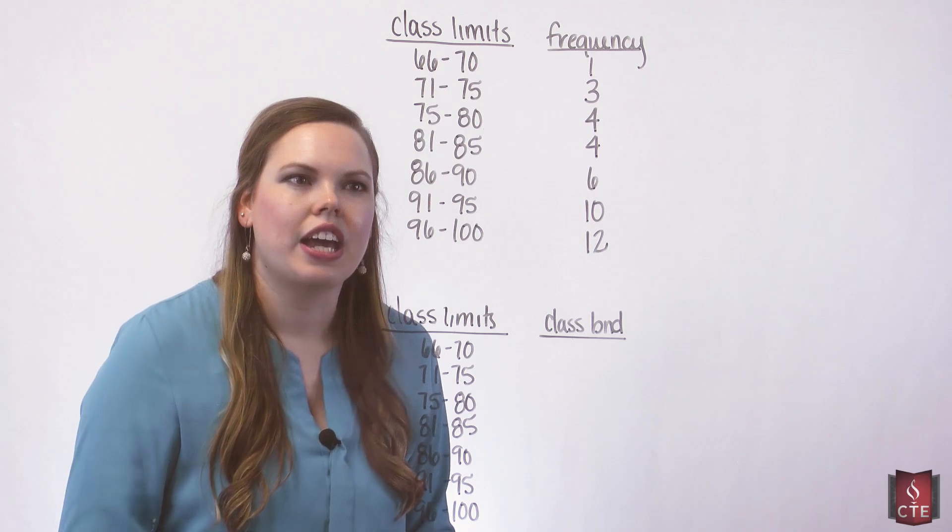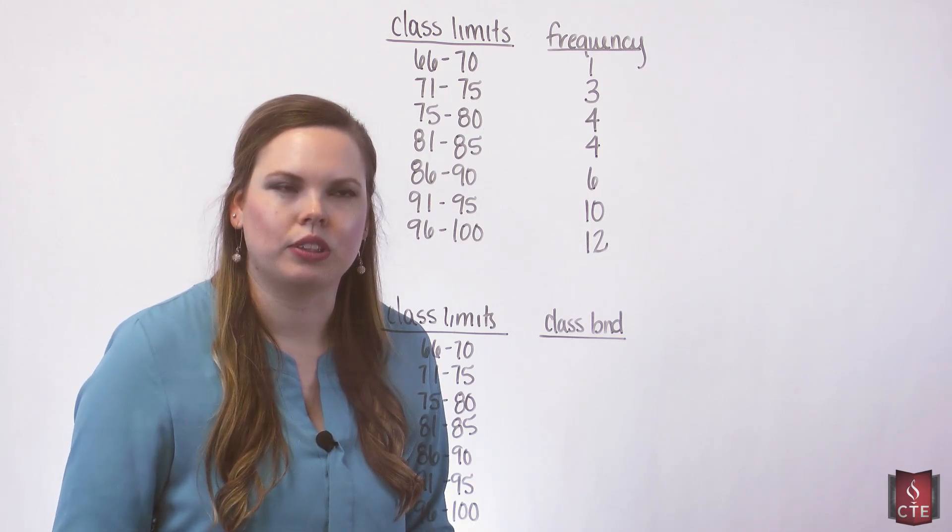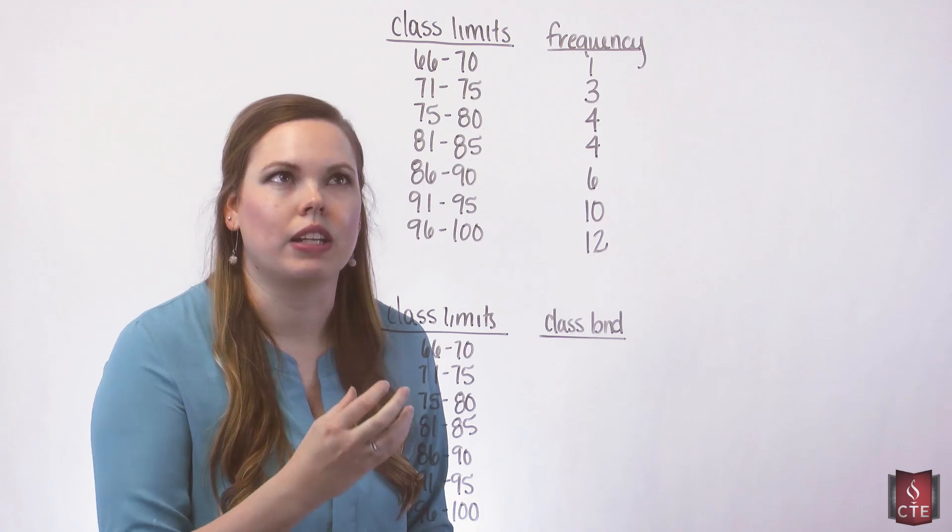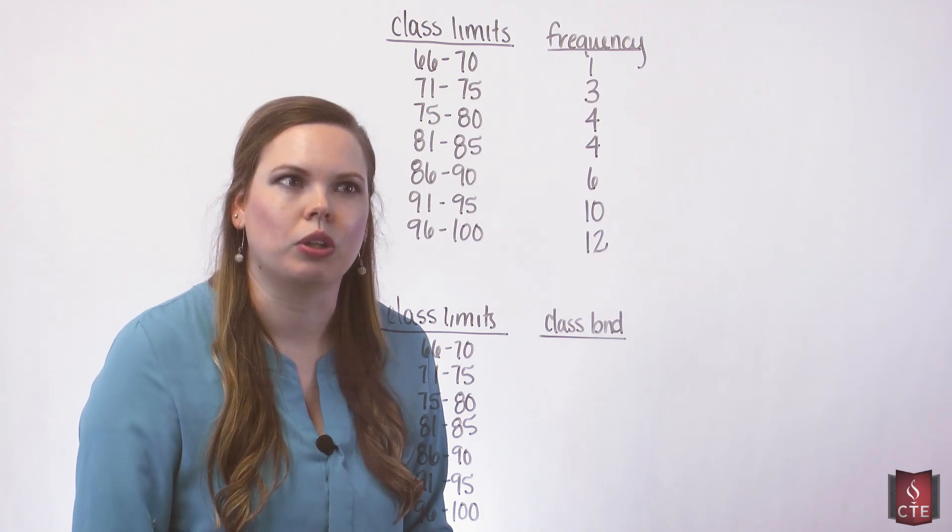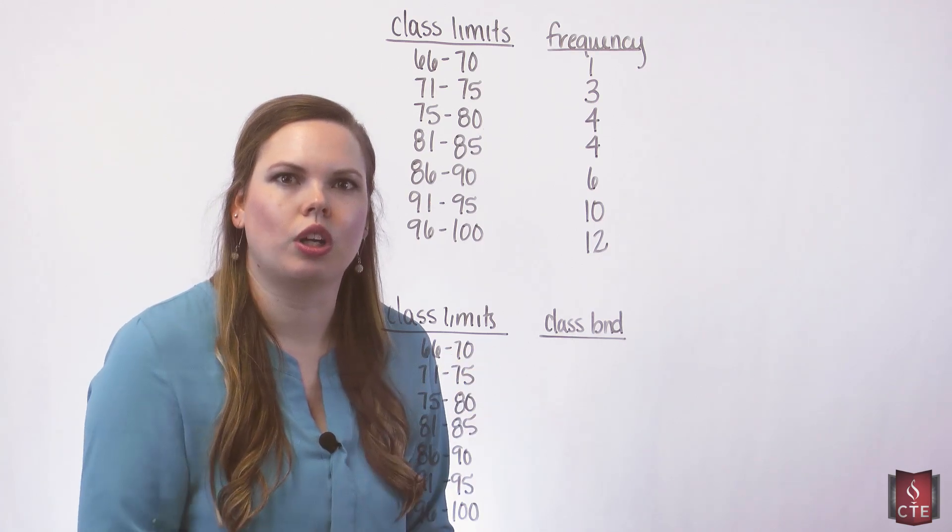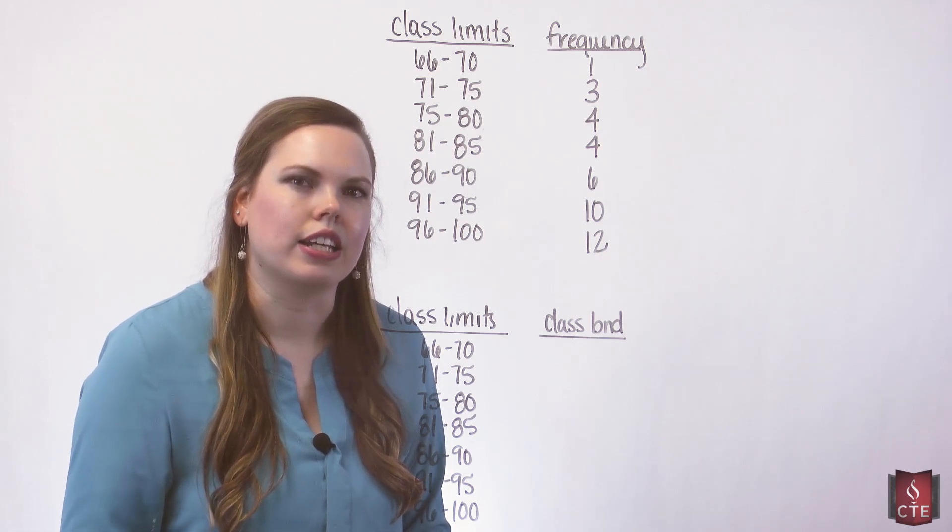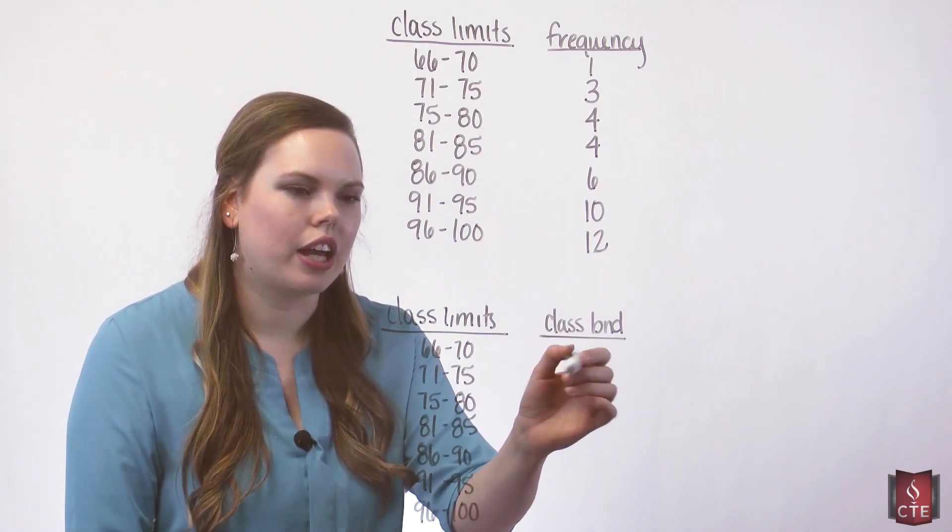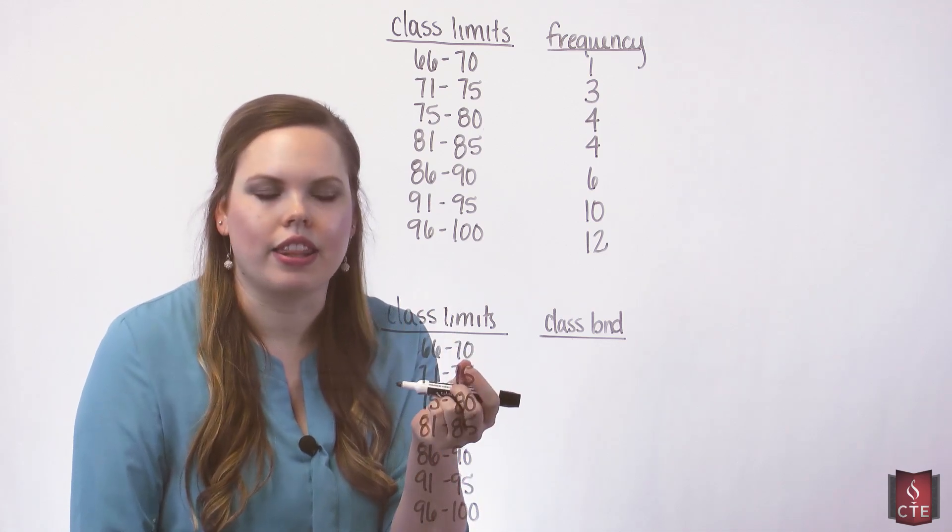We would round all those numbers to whole numbers and then record them in a class, in classes and in our frequency distribution. So the class boundaries would show us the unrounded data where they would land if it was unrounded. So in order to get our class boundaries, we kind of have to think of it in that way.